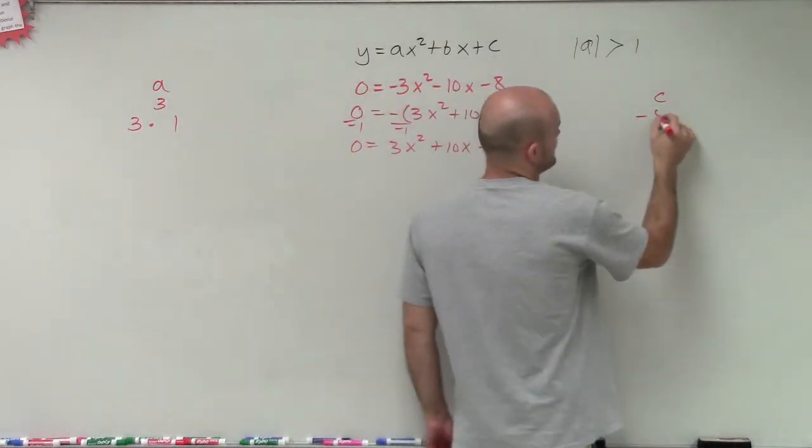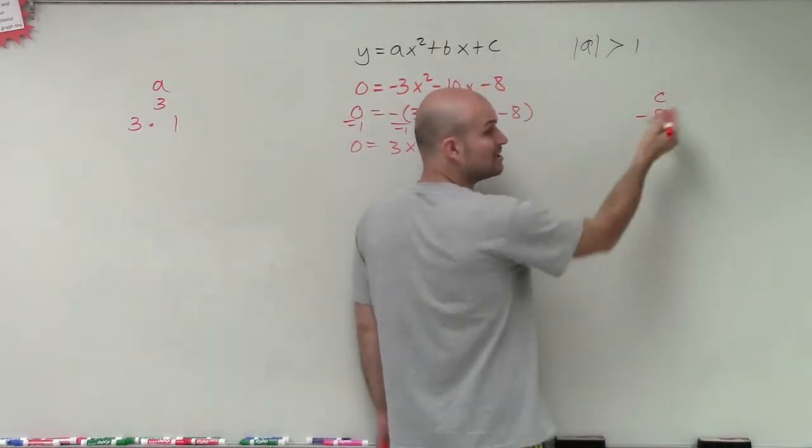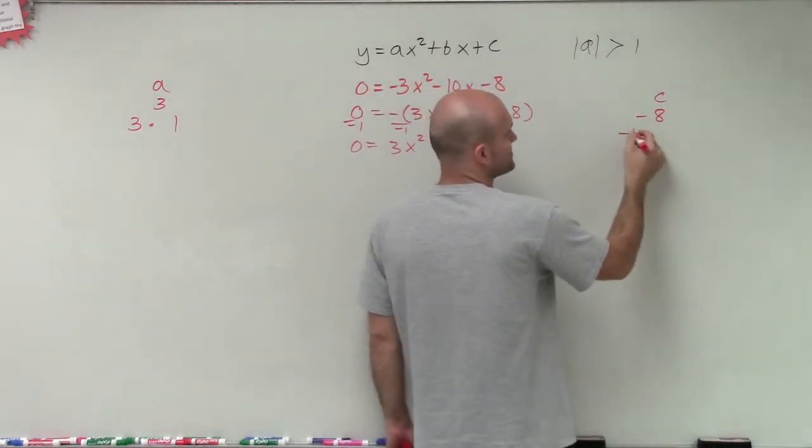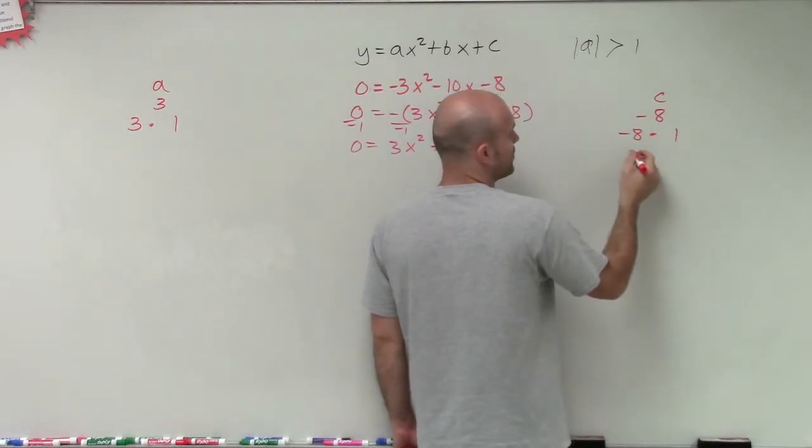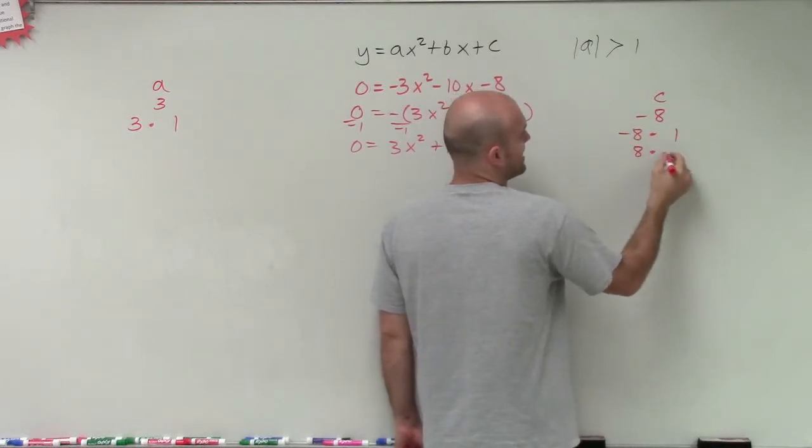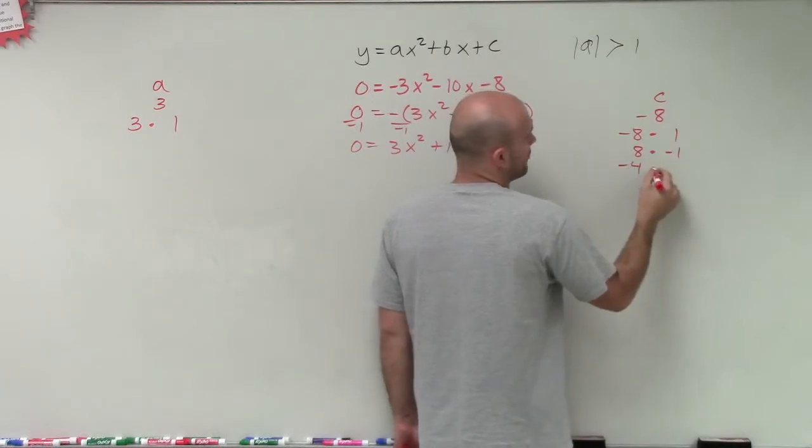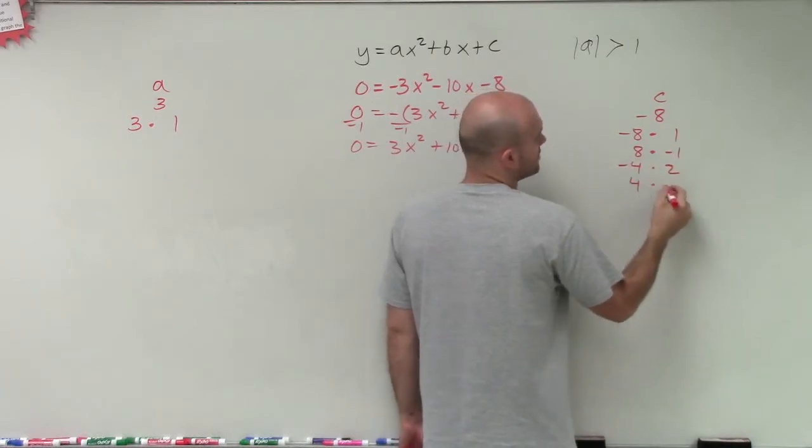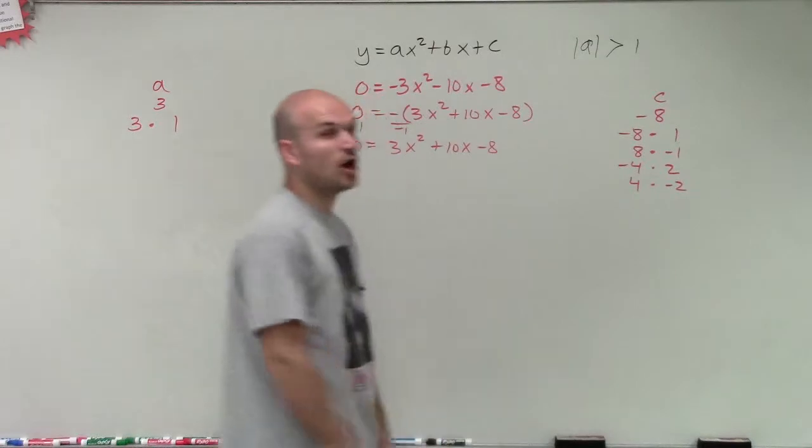However, negative 8 can be broken down a couple different ways. And I'm going to break this down for all the positives and all the negatives. So it can be broken down to negative 1, negative 8 times 1, broken down to 8 times negative 1, negative 4 times 2, 4 times negative 2. So those are going to be all my possibilities.